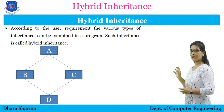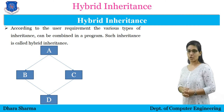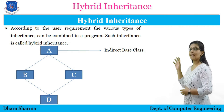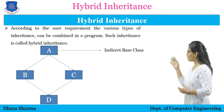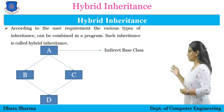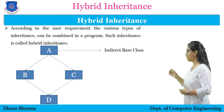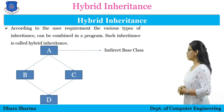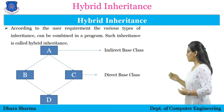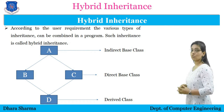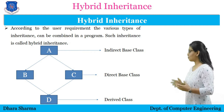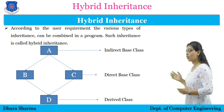So it can be considered as a diamond property. In this example, class A is the indirect base class from which the properties are getting inherited into B and C, and through B and C, those properties are getting inherited into class D. Class B and C are the direct base classes and class D is a derived class. So with the help of an object of class D, we can access the properties of all four classes.